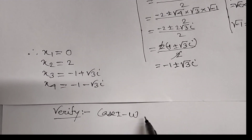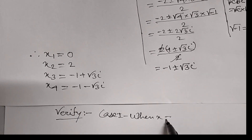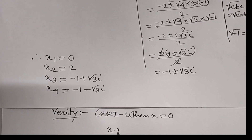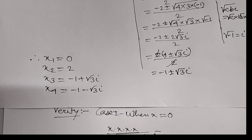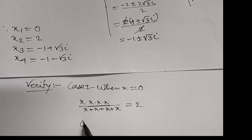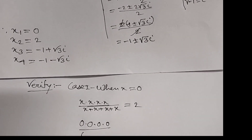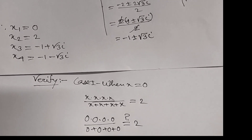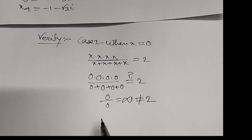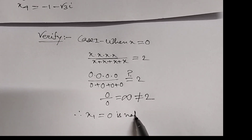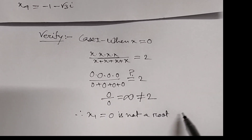Verify Case 1: when x equal to 0. We write the given question: x times x times x times x upon x plus x plus x plus x equal to 2. Putting x equal to 0: 0 into 0 into 0 into 0 upon 0 plus 0 plus 0 plus 0, which gives 0 upon 0 equal to infinity, not equal to 2. Therefore x1 equal to 0 is not a root of the given equation.